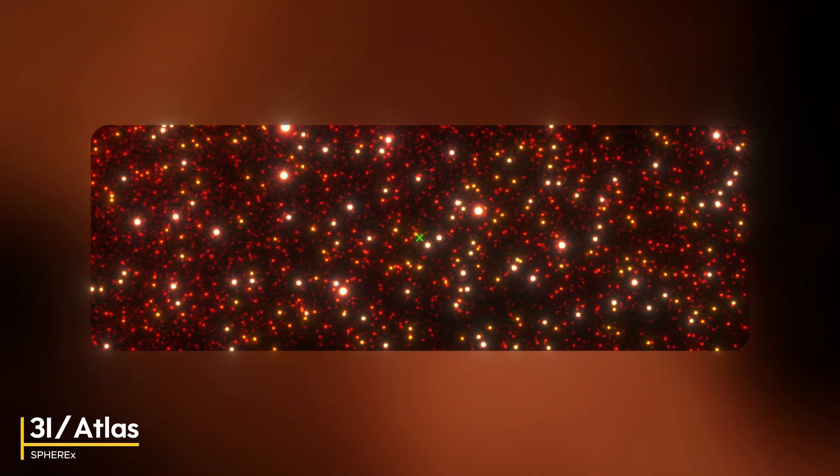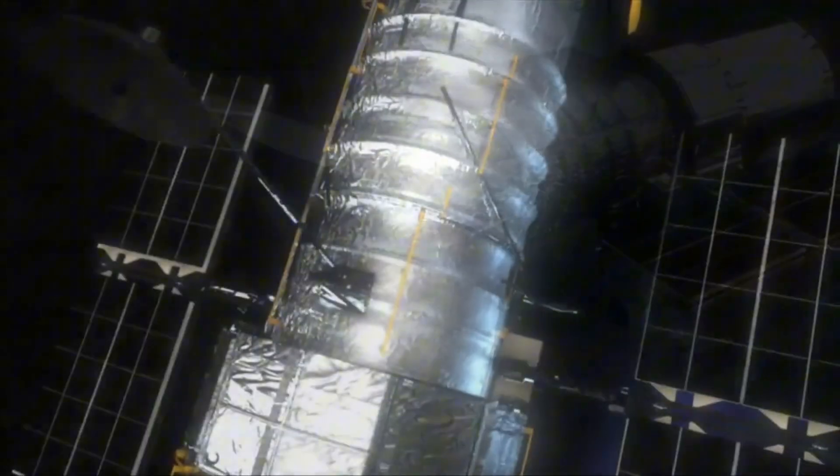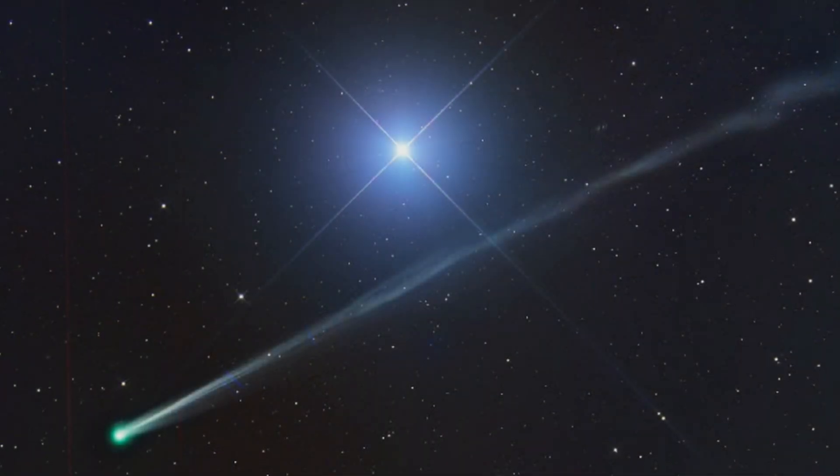Then came the tail mystery. When NASA's most powerful telescopes focused on Atlas, they discovered something that shouldn't exist. A comet tail pointing toward the sun instead of away from it.